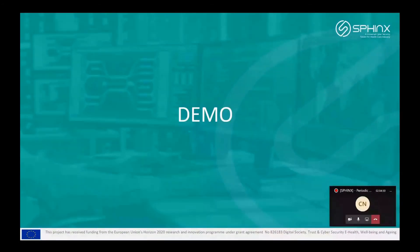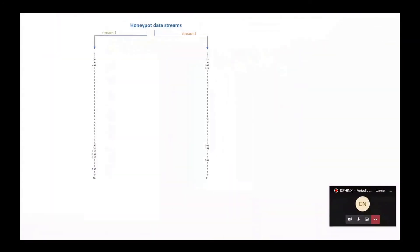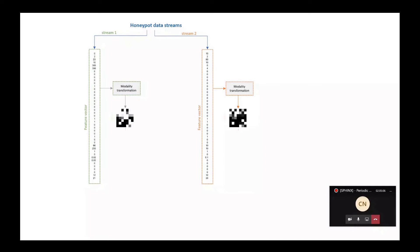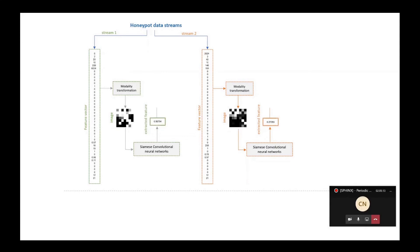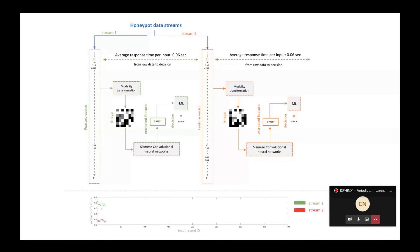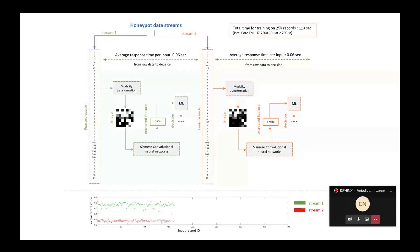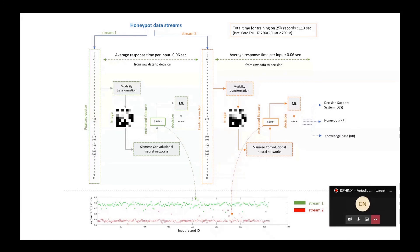In the last part of my presentation, I have a short demo that demonstrates how the MLID component works. We consider two data streams coming from the Honeypot: one representing a normal user, shown in green, and the other representing attacks, shown in orange. Checking the raw data it is almost impossible to extract any knowledge. The MLID component performs modality transformation, converting raw data to images in which visual patterns can be identified. The images are then transformed to a single feature indicator. The green data stream receives values around 0.5, while the orange one — the attacker's — receives much lower values. The MLID component needs approximately 0.06 seconds average response time per feature to provide a decision that is then sent to the rest of the components.